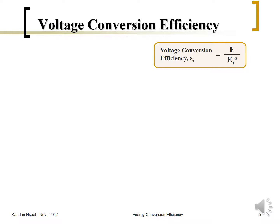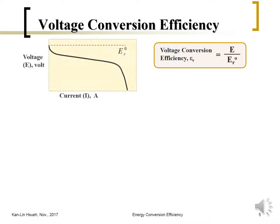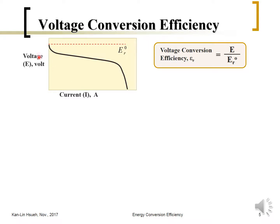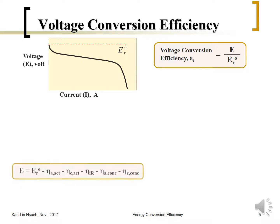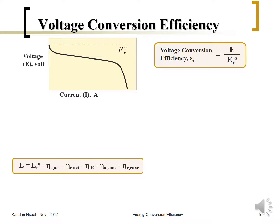For the voltage conversion efficiency, if we plot cell voltage against current or current density, at current equal to zero we have the open-circuit voltage — the ideal thermodynamic or theoretical cell voltage. But in reality, because of all the different overpotentials, the cell voltage decreases. As soon as current is drawn and current increases, the cell voltage decreases.